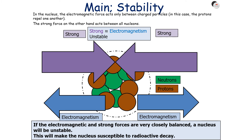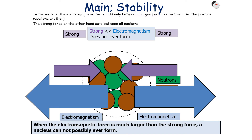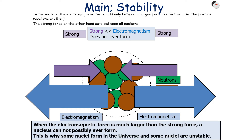In the nucleus, the electromagnetic force only acts between charged particles — so protons — while the strong force acts between all nucleons, because they're all made from quarks. If the electromagnetic and strong forces are very closely balanced, a nucleus becomes unstable and susceptible to radioactive decay, because the almost-equal forces effectively cancel, allowing the weak interaction to permit decay. If the strong interaction is much greater than the electromagnetic interaction, the nucleus is stable and will not decay. But if electromagnetism is much greater than the strong interaction, the nucleus cannot form at all.